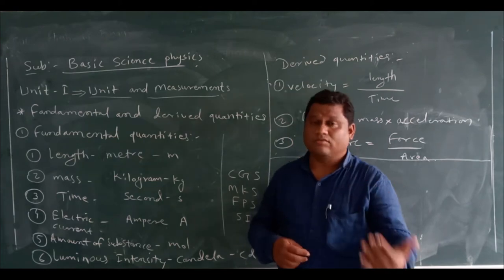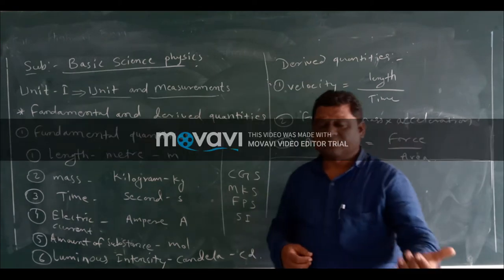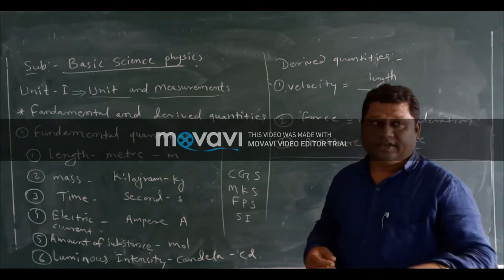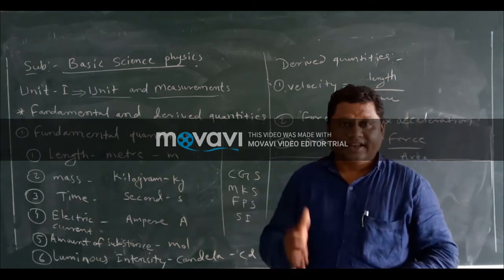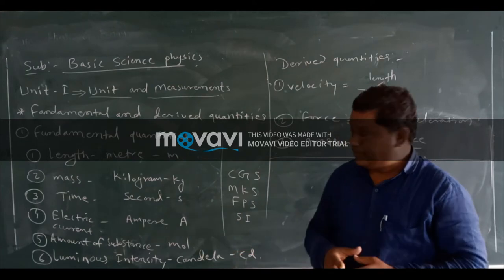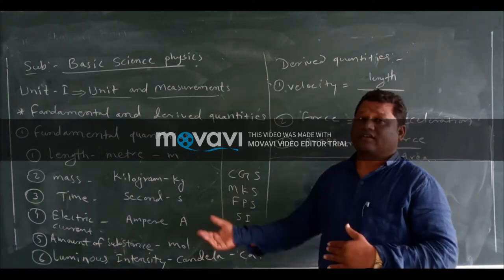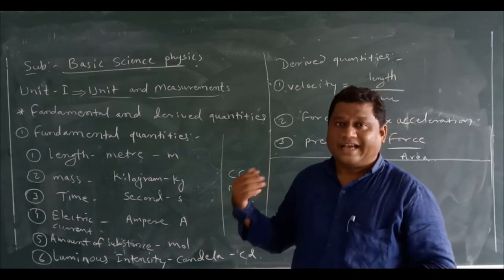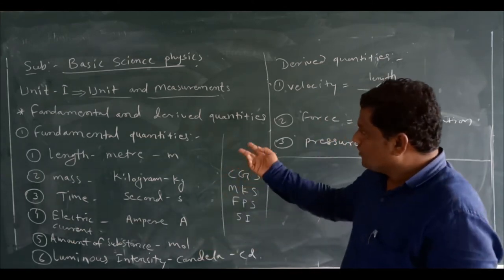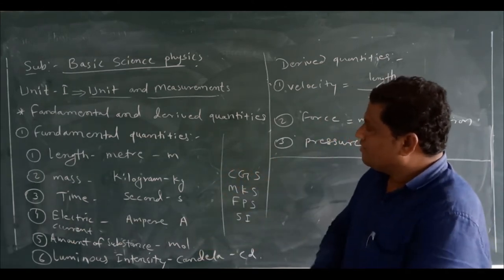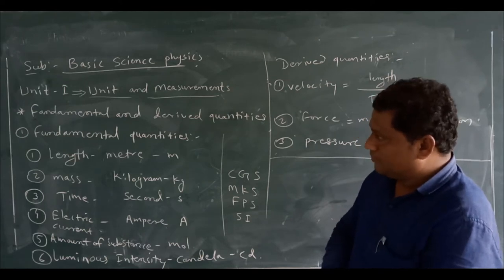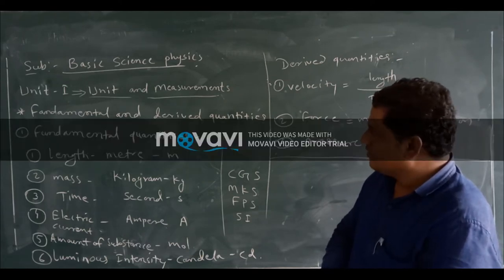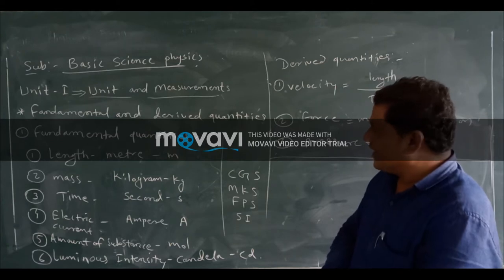Displacement represents direction as well as magnitude. Further, the physical quantities are classified into two main types: number one, fundamental quantity and derived quantity.